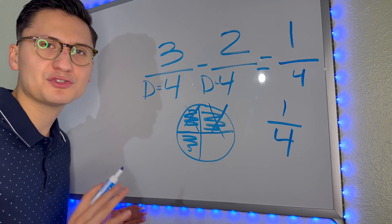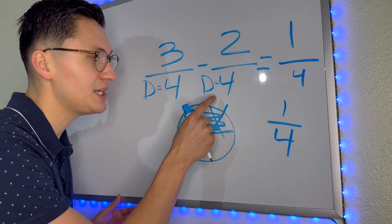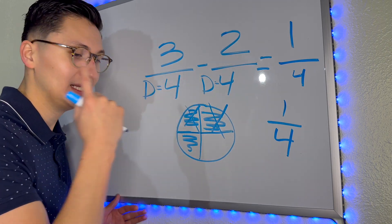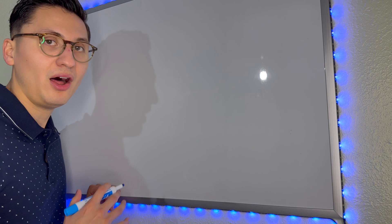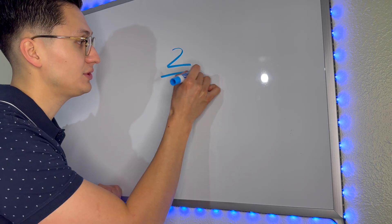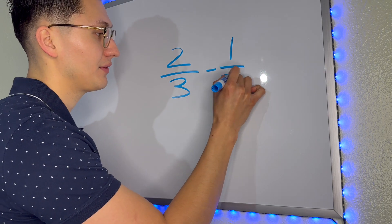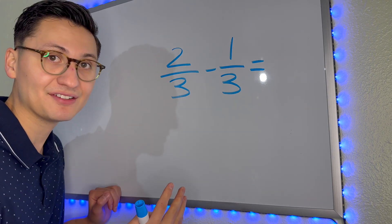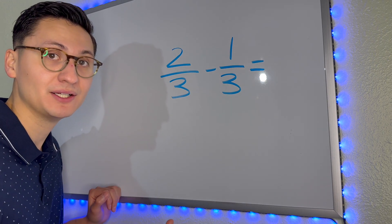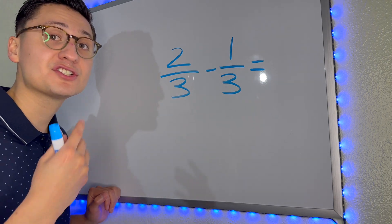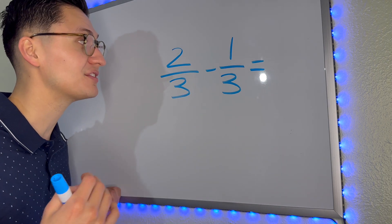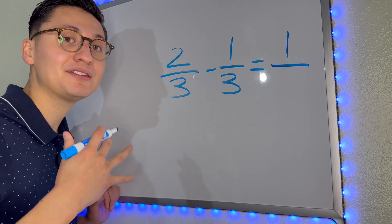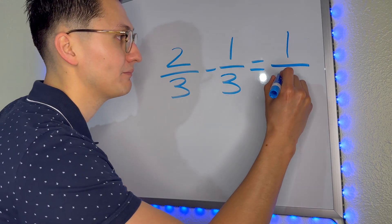Simple guys, super simple. If the denominators are equal, all you have to do is add or subtract depending on what it tells you to do. Let's do one more subtraction problem. This last one is going to be two-thirds minus one-third. You guys already know — denominators, are they equal? Yes. So all we have to do is subtract. We look at the sign and it says subtract, so we have to take away. Two minus one equals one. And the denominator always stays the same when we add or subtract.